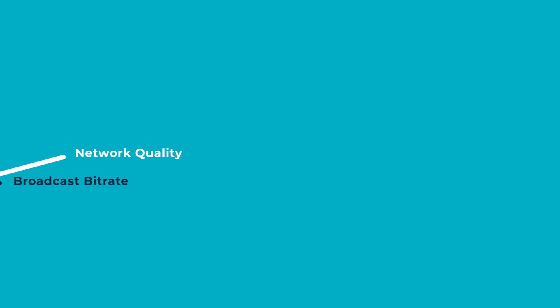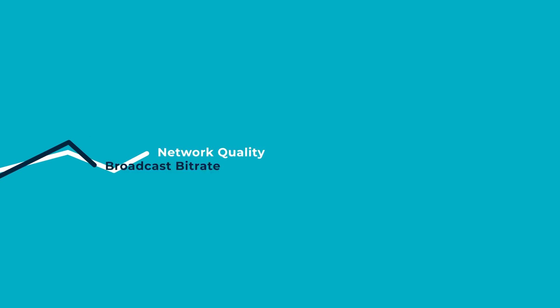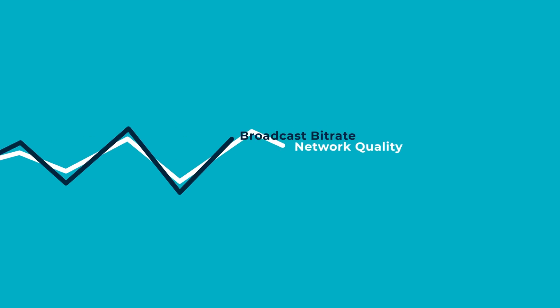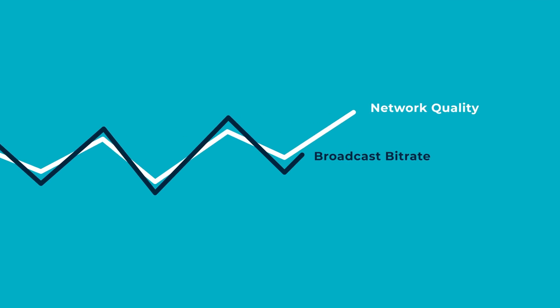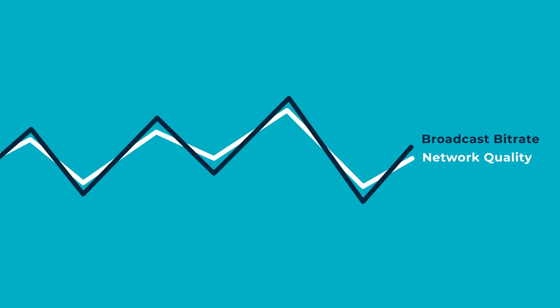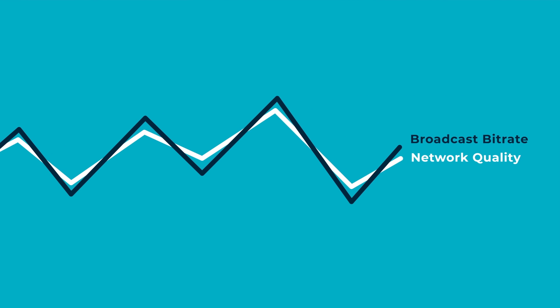Number two: it comes with built-in adaptability. We all know how spotty our network connections can be sometimes. BoxCast Flow's built-in link quality adjustment automatically adapts to changing conditions in your network. It decreases your bit rates to ride through rough patches, and brings them back up when things are going well again.